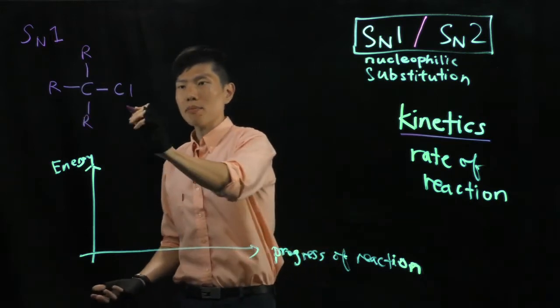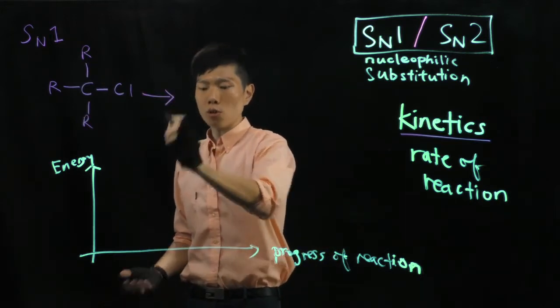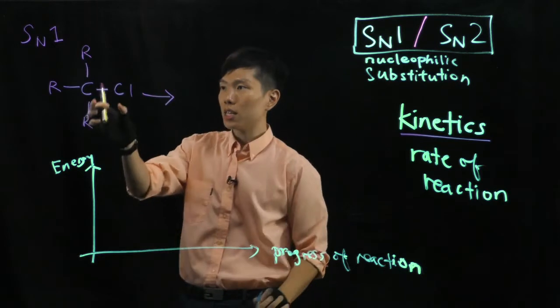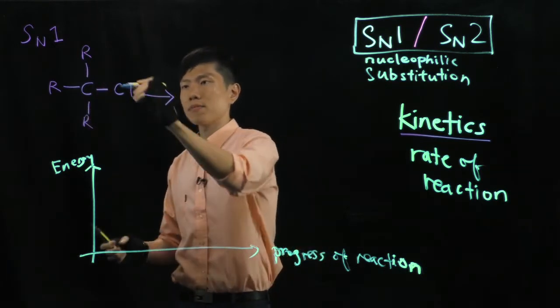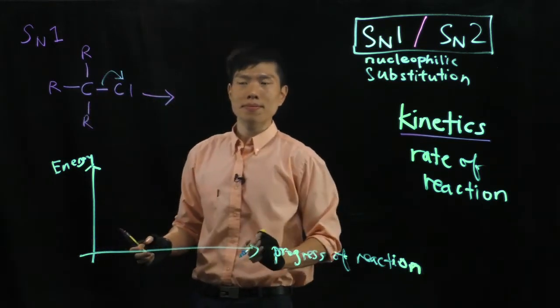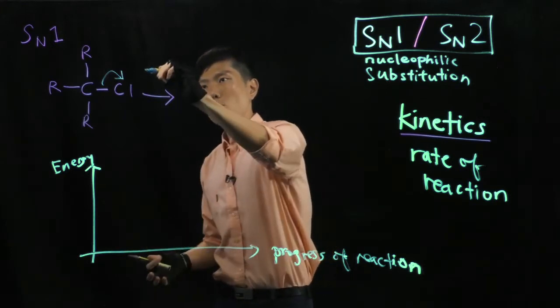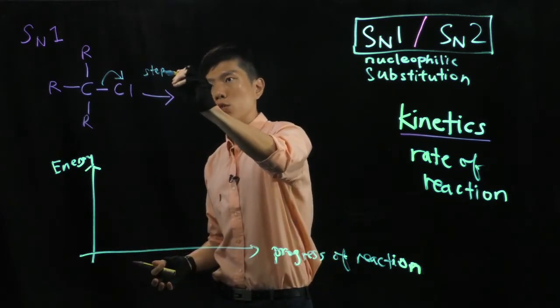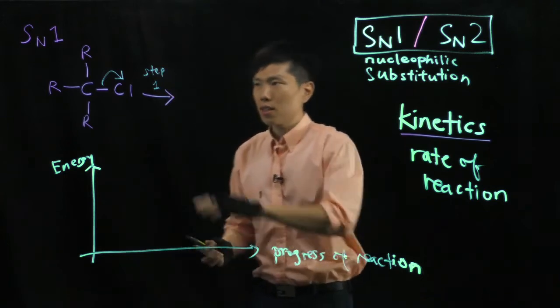Now, remember, in the first step, what happens is the self-dissociation of the leaving group. This bond will just break. The first step. So, step one, we are just losing the leaving group.